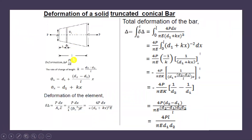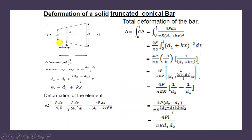Let the length be L. Let us consider an elemental length dx at a distance x from section 1, and let the diameter of the element dx at distance x be φx. Since the area is constantly varying, you cannot use the deformation formula δ = PL/AE. The rate of change of diameter K is equal to (D2 minus D1) divided by L — that is, larger diameter minus smaller diameter divided by L.